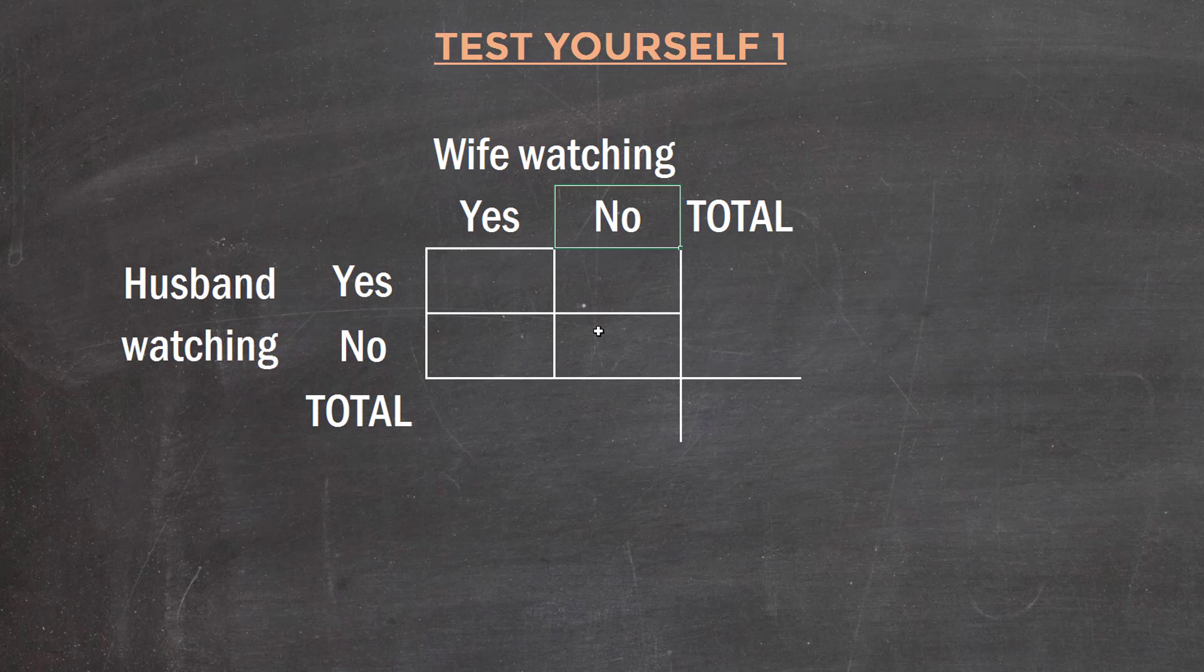My method is to read the question line by line and fill in the table with all the information provided. The first bit tells us that husbands are watching television 60% of the time, so I can put 0.6 into this marginal cell.